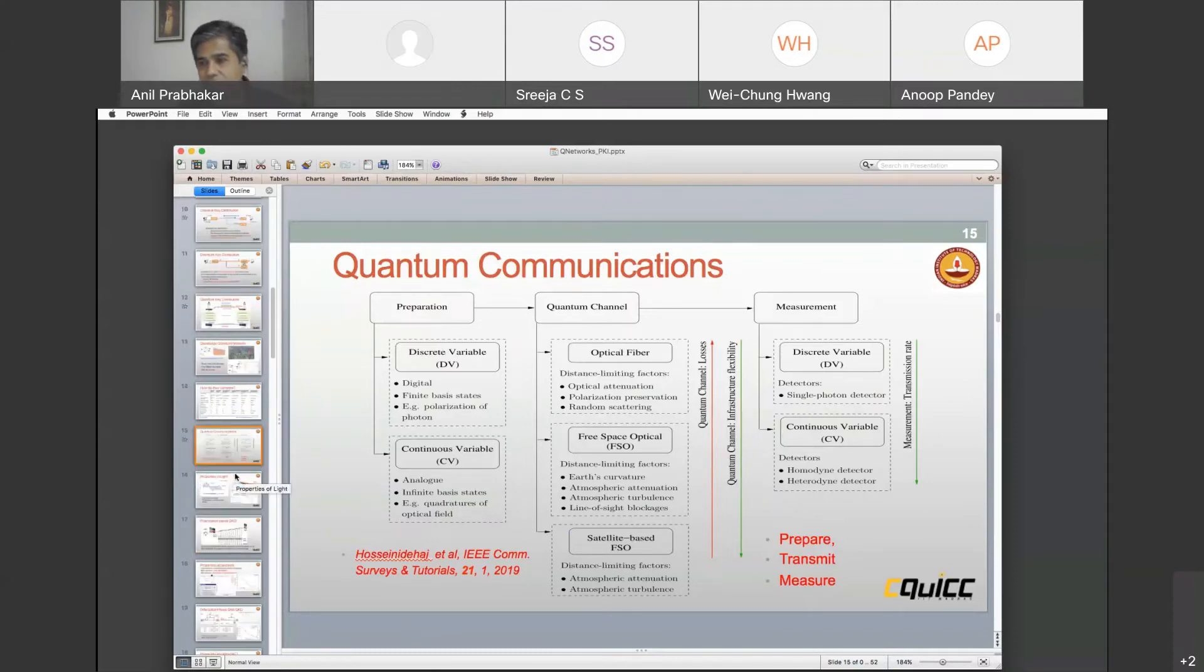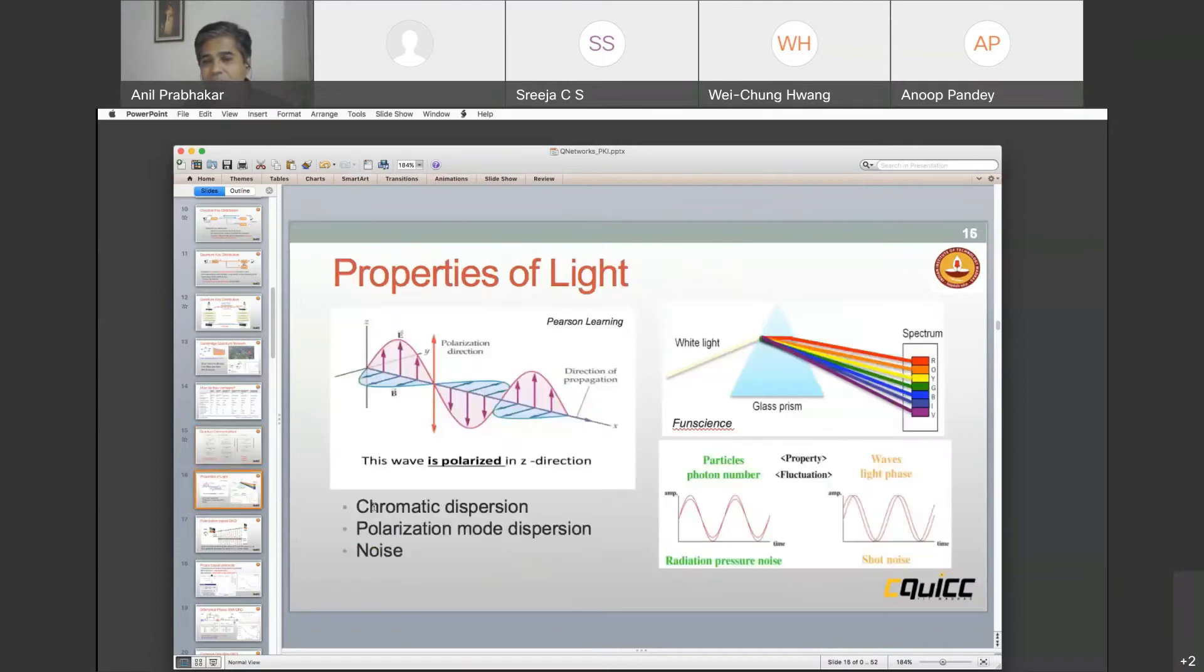One of the things you have to understand is unlike everything else, quantum key distribution, quantum communications happens with photons. You have to understand photons. That means we are actually using some of the properties of light that we may have learned in our high school. One of the properties is polarization, the direction of polarization, vertical or horizontal, if the photon is traveling out of the board.